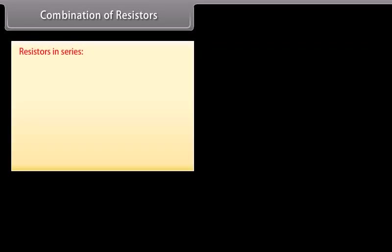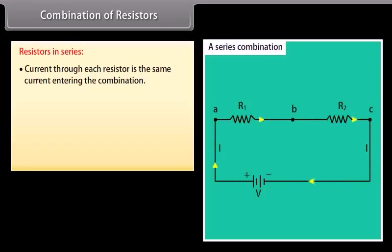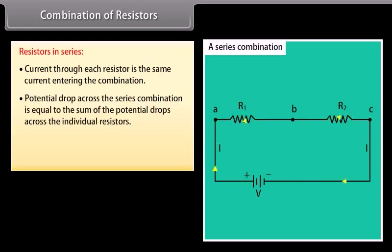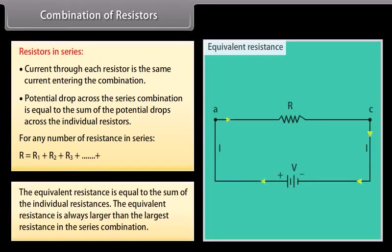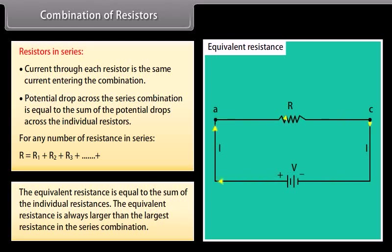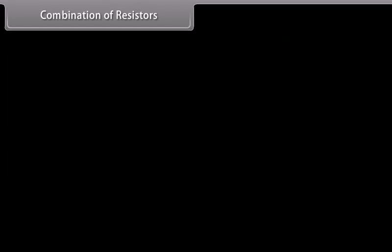In a series combination, current through each resistor is the same. The potential drop across the series combination equals the sum of potential drops across individual resistors. For any number of resistances in series: R = R₁ + R₂ + R₃ + … The equivalent resistance is always larger than the largest resistance in the series combination.